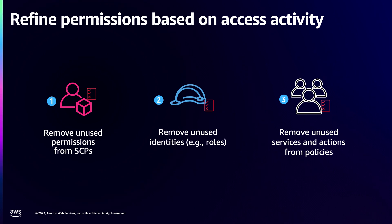The next step is to dig a little deeper into your accounts to identify roles or users that are not being used. For example, you can look at the role last used information for each role in your account, and if a role hasn't been used in the last 90 days, you can delete it and reduce the access points to your account. Once you do this cleanup, the next phase is to look at permissions granted to your active roles. IAM Access Advisor provides last access information at the service and action level to help you identify what permissions are granted to a role and when they were last used.